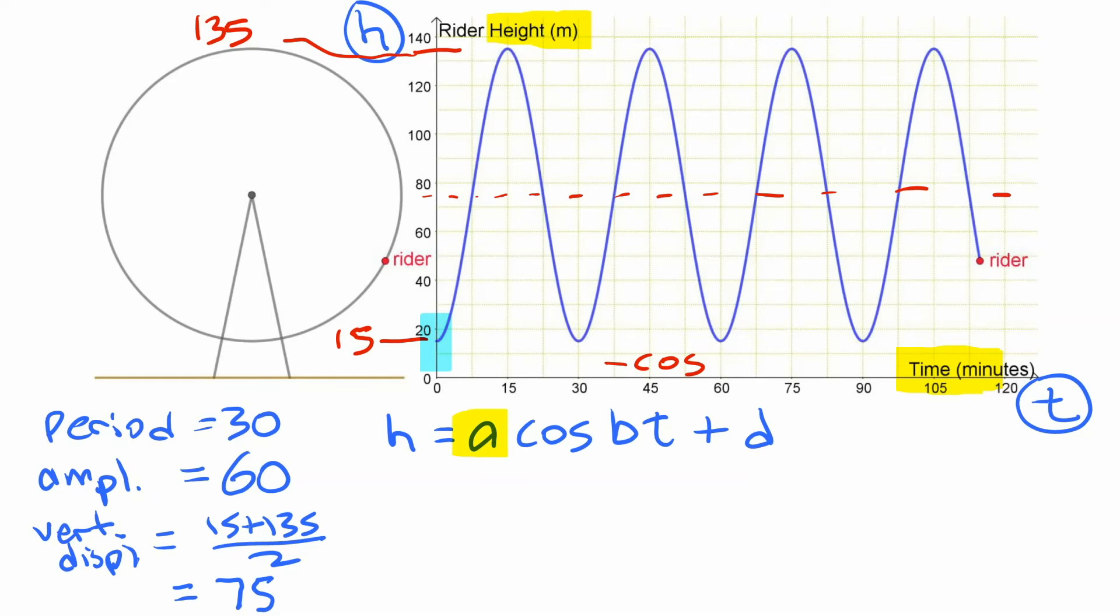Some of them we just substitute directly in, like the first one here. The a value, well we said we need it to be negative if we're not going to have a horizontal shift. And that a value is the amplitude, so negative 60 cos. And the b value is related to the period. We don't just put this number in there though. The b value is 2π divided by the period. So 2π over 30 is what we put in there. 2π over 30 times time. If you want to put some brackets around it, you can, but you don't have to since it's all multiplied there. And then the value of d, the vertical shift, we said that vertical displacement was 75. So that is our function right there.